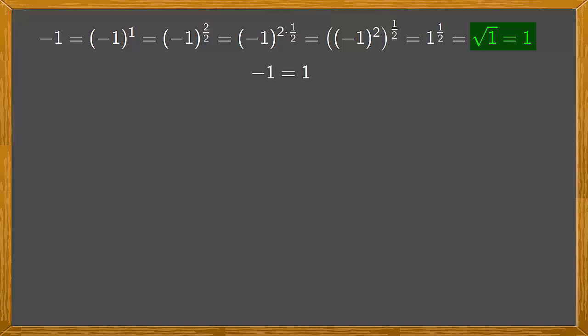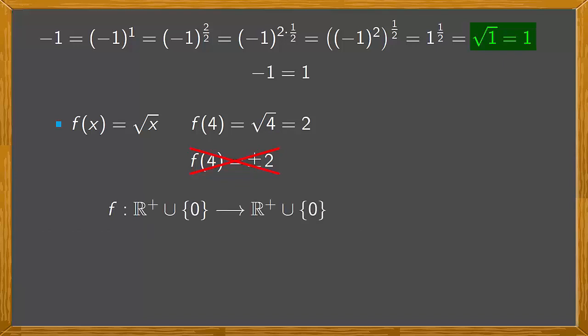However when we work with the square root as a function only the positive result is considered, otherwise we wouldn't speak of the square root function. It couldn't be a function if there were elements with two images. Remember the square root function is defined from the non-negative integers onto the non-negative integers, so that's not the problem.